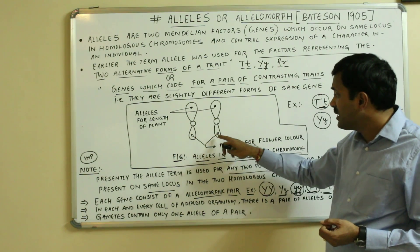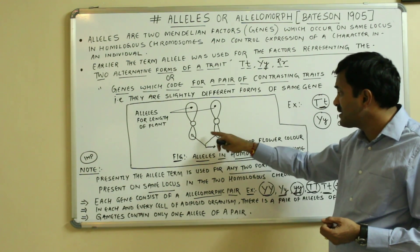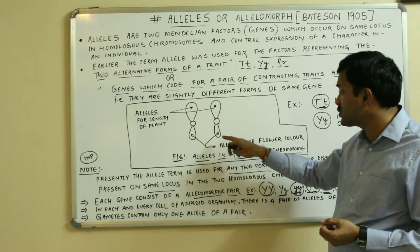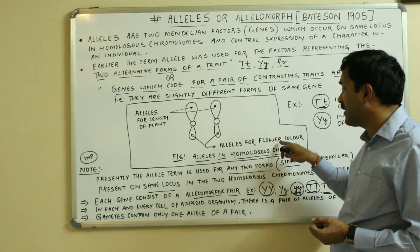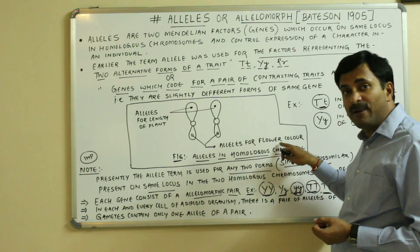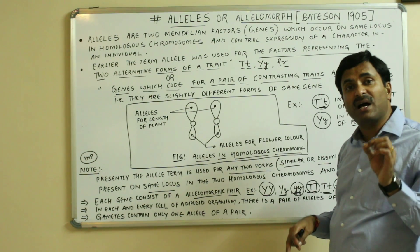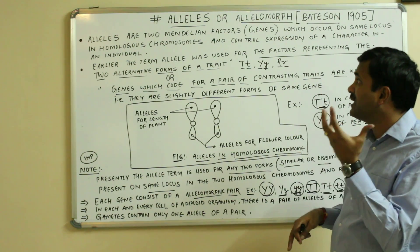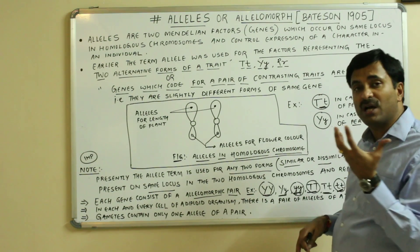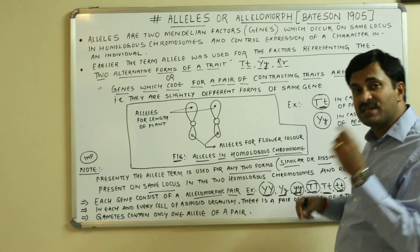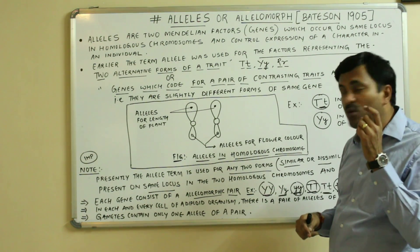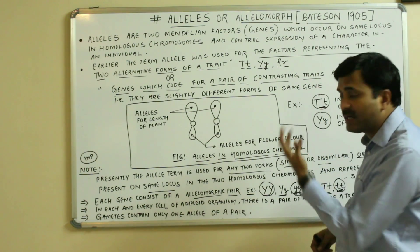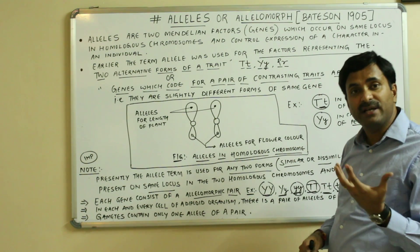These are the alleles which are present on the same locus on the homologous chromosome and they are for the flower color. So alleles are two Mendelian factors which occur on the same locus on the homologous chromosome and they control the expression of a character in an individual.